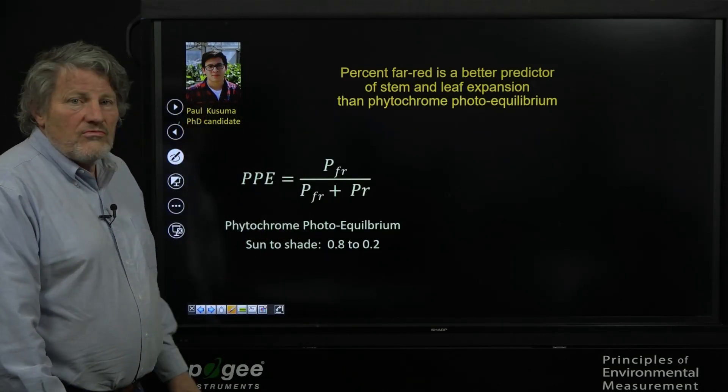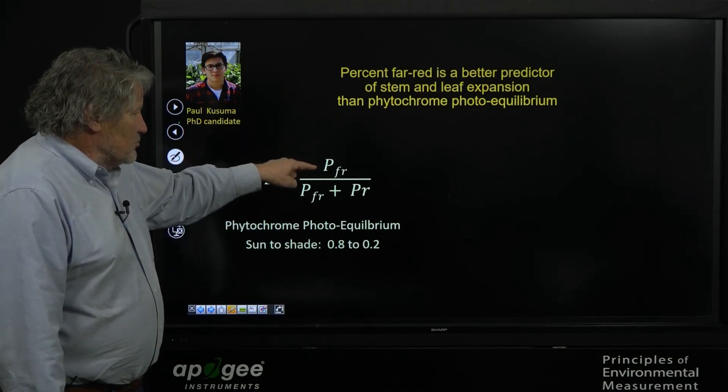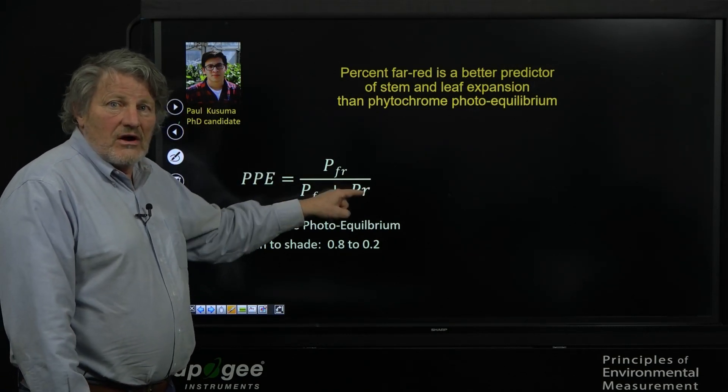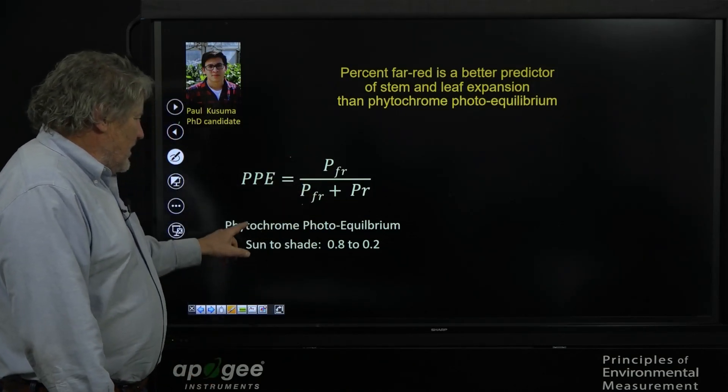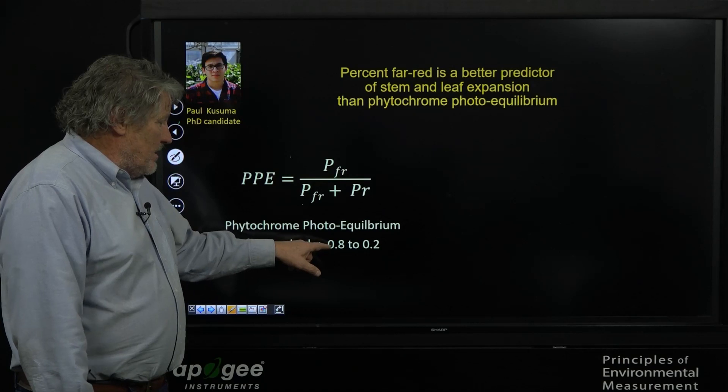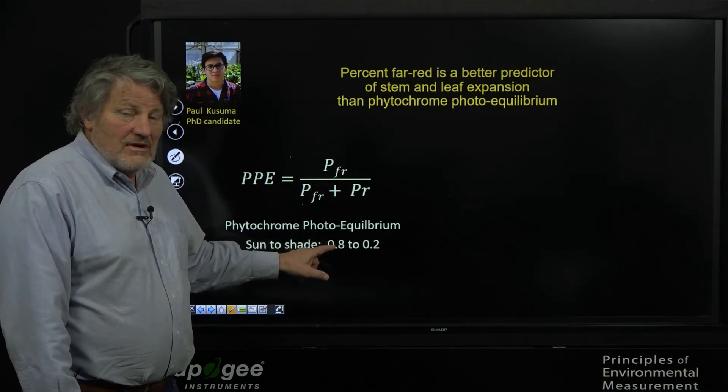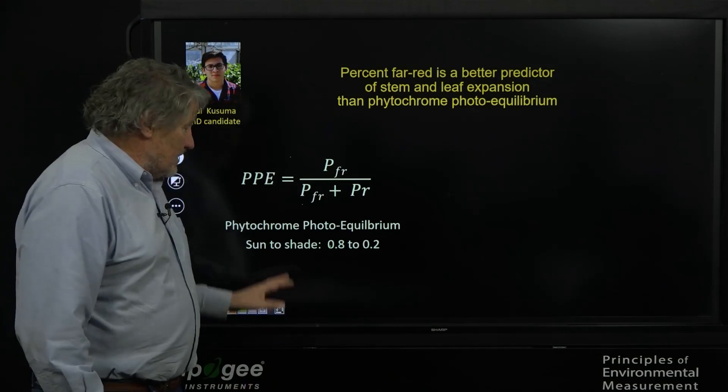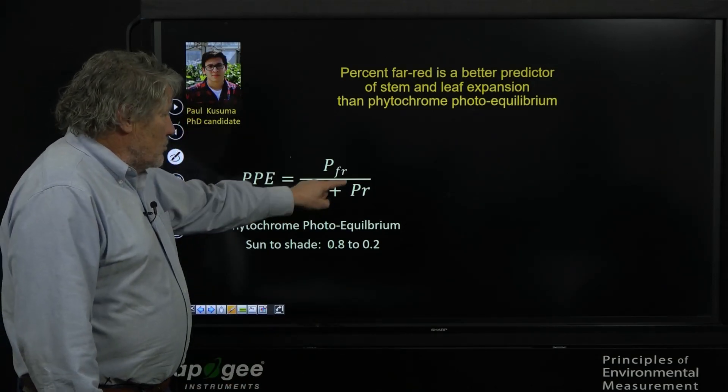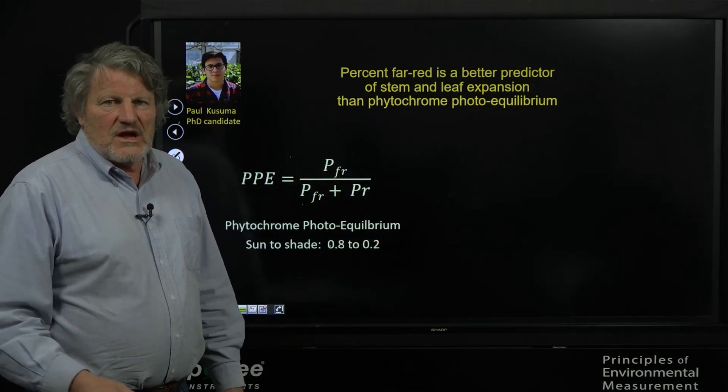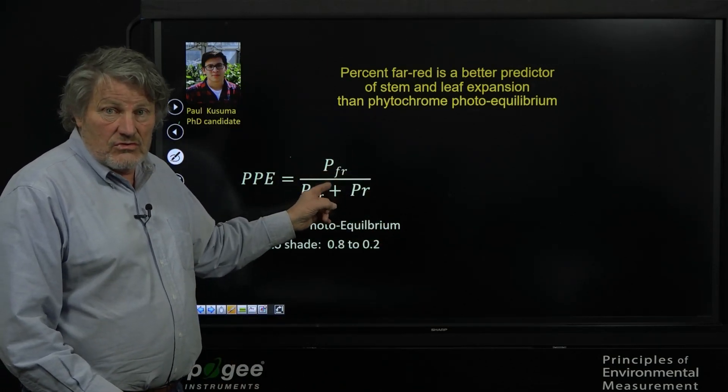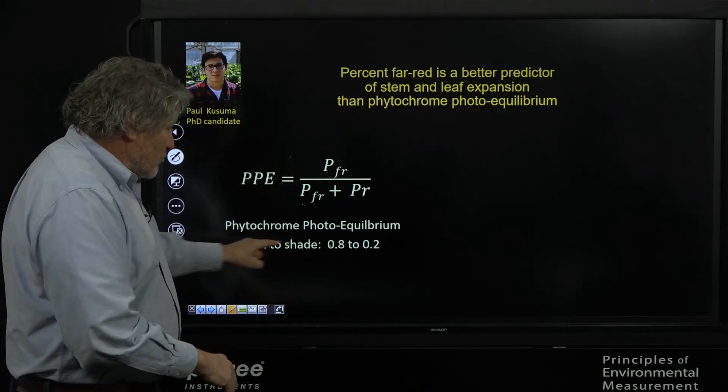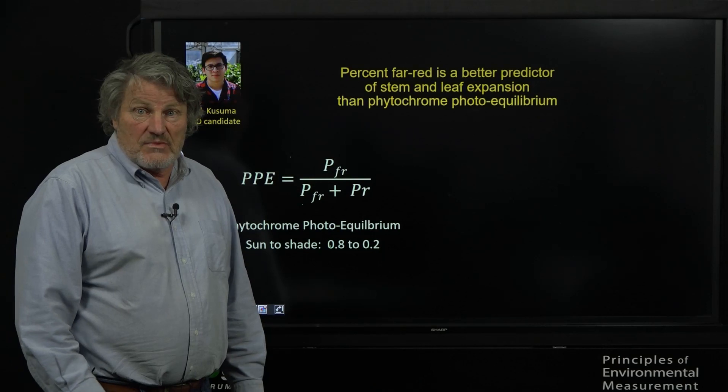The first one, phytochrome photoequilibrium, is a weighted number of far-red photons divided by far-red and red photons. It's a ratio, and this ratio ranges from sun is about 0.8, and as it goes into deep shade it goes to 0.2. So this number gets smaller as we get into shade. How you measure these is complicated. It requires a spectroradiometer, and I'm going to show you exactly how to do that. Apogee Instruments spectroradiometers are pre-programmed to measure this and read out in this number, but you still need to purchase a spectroradiometer.